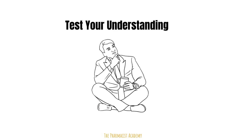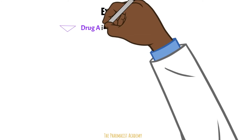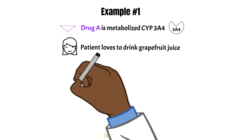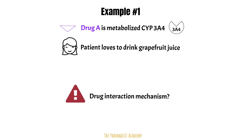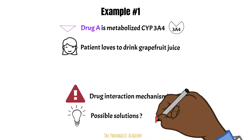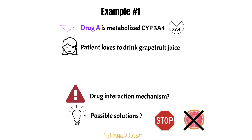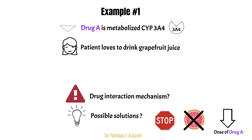Let's take a look at some examples. Drug A is metabolized by the CYP3A4 enzyme, and we have a patient who's on drug A and loves to drink grapefruit juice. The mechanism is simple: grapefruit juice is an inhibitor of CYP3A4, so it will decrease the metabolism of drug A and increase its levels. In clinical practice, depending on what drug it is, an increase in levels can be detrimental, so we would completely avoid this interaction — it would be a contraindication. For some drugs, you can reduce the dose and counsel the patient to avoid grapefruit juice.